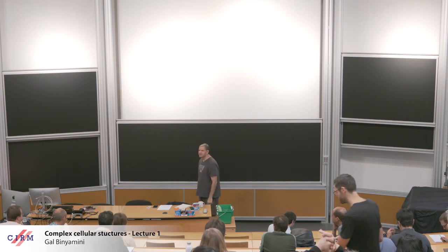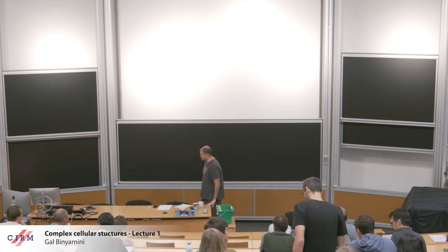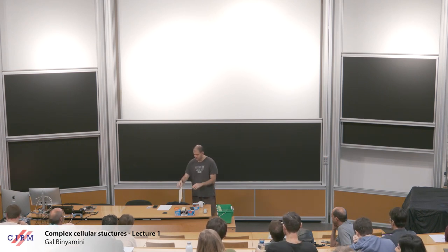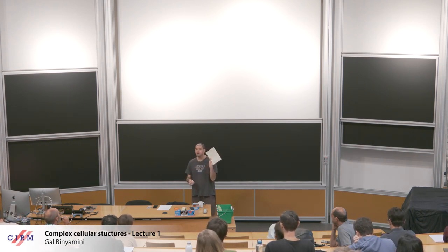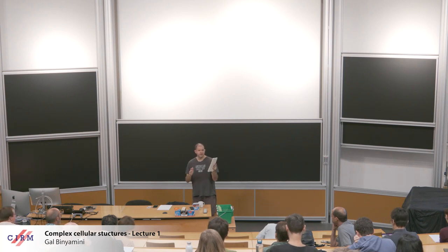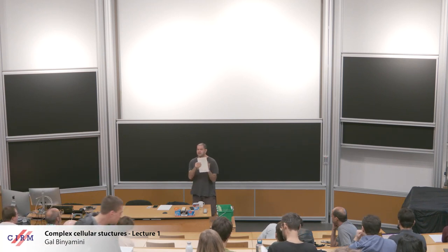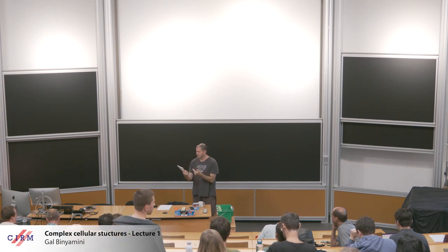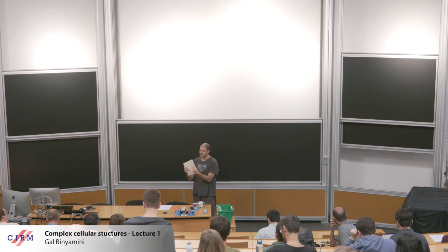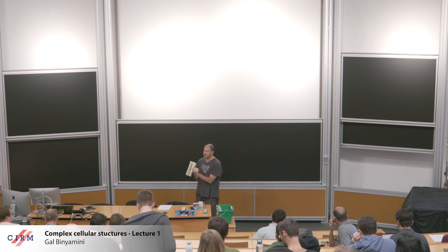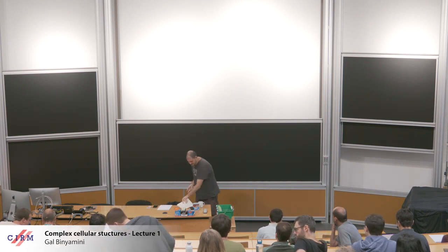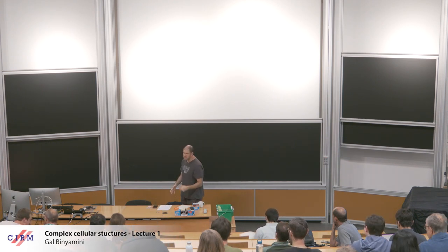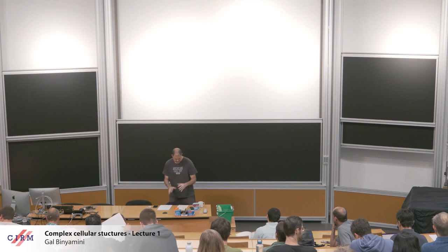Thank you for the invitation. It's very nice to be here in CIRM. I want to talk about this complex cellular structure. I'll basically be following this paper — any references you can find in the paper titled 'Complex Cellular Structures' in Annals 2019. The paper is more of a book than a paper, so it's very long. I will not exactly follow the order of the paper; I'll try to motivate things in a different order.